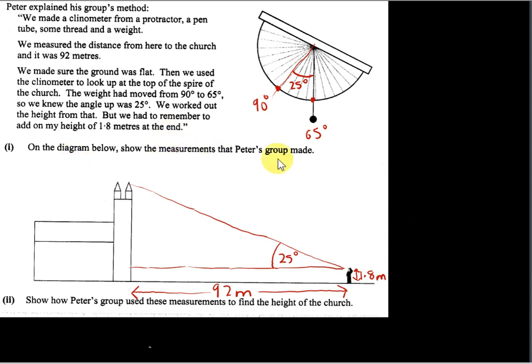On the diagram below, show the measurements that Peter's group made. By the way, this here is a right angle. This is the horizontal. We assume, of course, that the church is vertical.